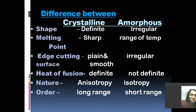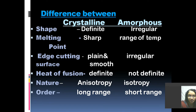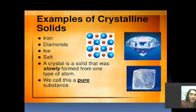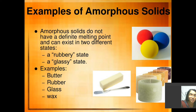The next property is nature: crystalline solids are anisotropic in nature whereas amorphous solids are isotropic in nature — I shall discuss this in the coming slides. The last notable difference is the order of arrangement: in crystalline solids we have long-range order of arrangement, and in amorphous solids it is short-range. Examples of crystalline solids include diamond, ice, and salt. Examples of amorphous solids include butter, rubber, glass, and wax — these do not have a definite melting point and exist in a rubbery or glassy state.